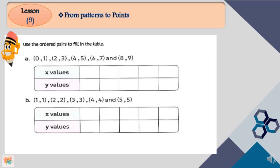Use the ordered pairs to fill in the table. From ordered pairs I need to write x values and y values. We learned that x values go on the x coordinates and y values go on the y axis and x axis. We said that in ordered pairs, the first number is always x and the second number is y.